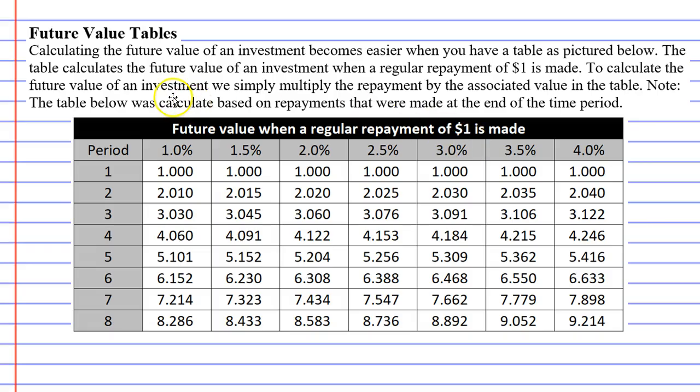And I'll give you a quick example. Let's say that you want to make regular repayments of one dollar every year. And let's say that the bank offers you an interest rate of 3% per year. And let's say you do this over a period of five years.